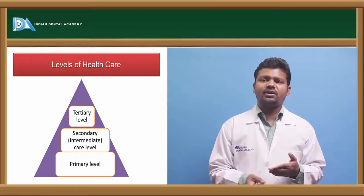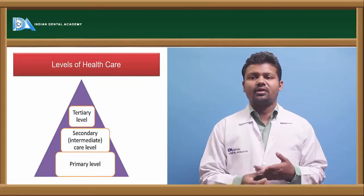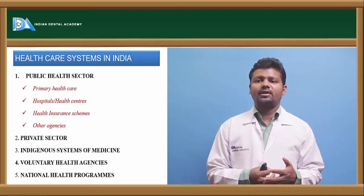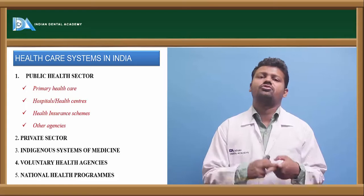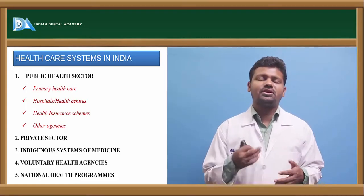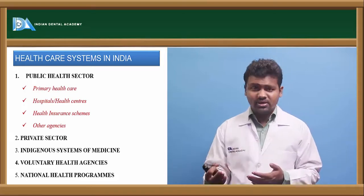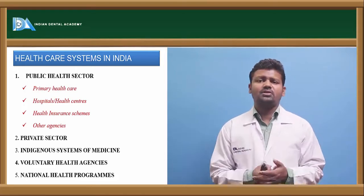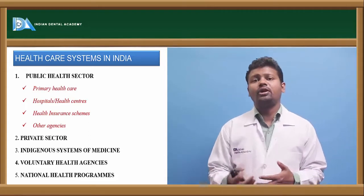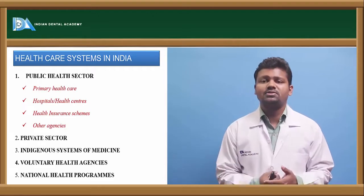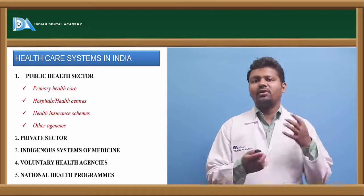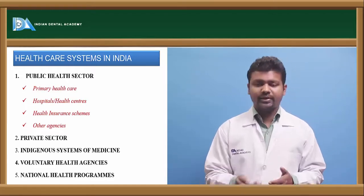There are three levels of healthcare: primary, secondary, and tertiary. Coming to health sectors in India, there are five types. First is the public health sector, comprising primary healthcare, hospital and health services, health insurance schemes, and other agencies. Then there are private sectors which also provide health services. The indigenous system of medicine includes Ayurvedic or Ayush. Then there are voluntary health agencies which provide health services. Finally, there are national health programs through which health is provided to citizens in both urban and rural areas.